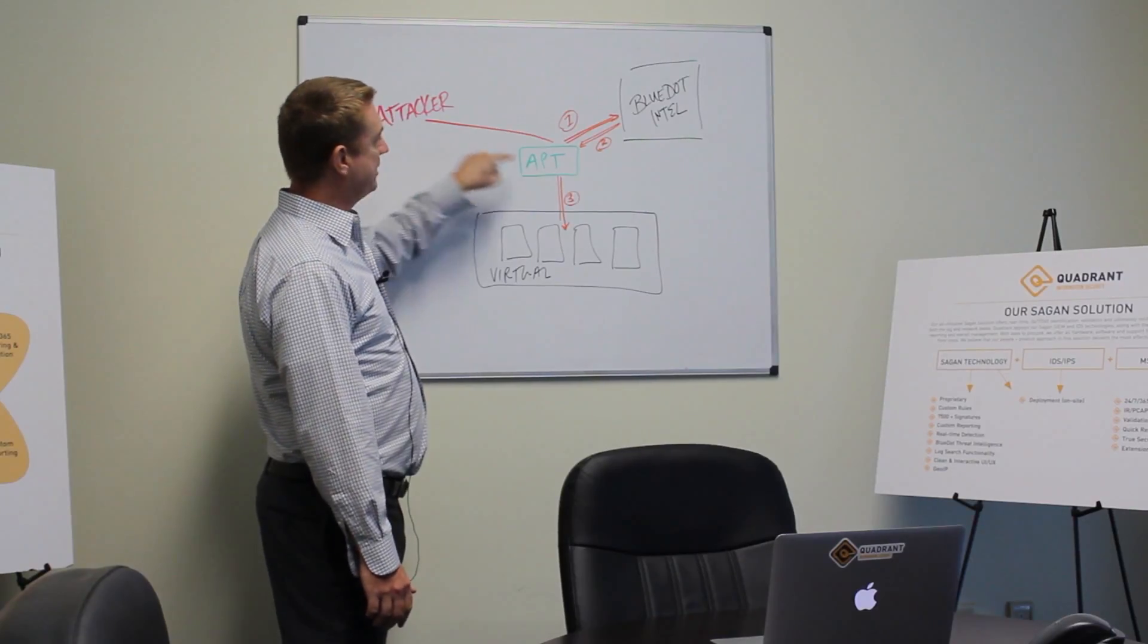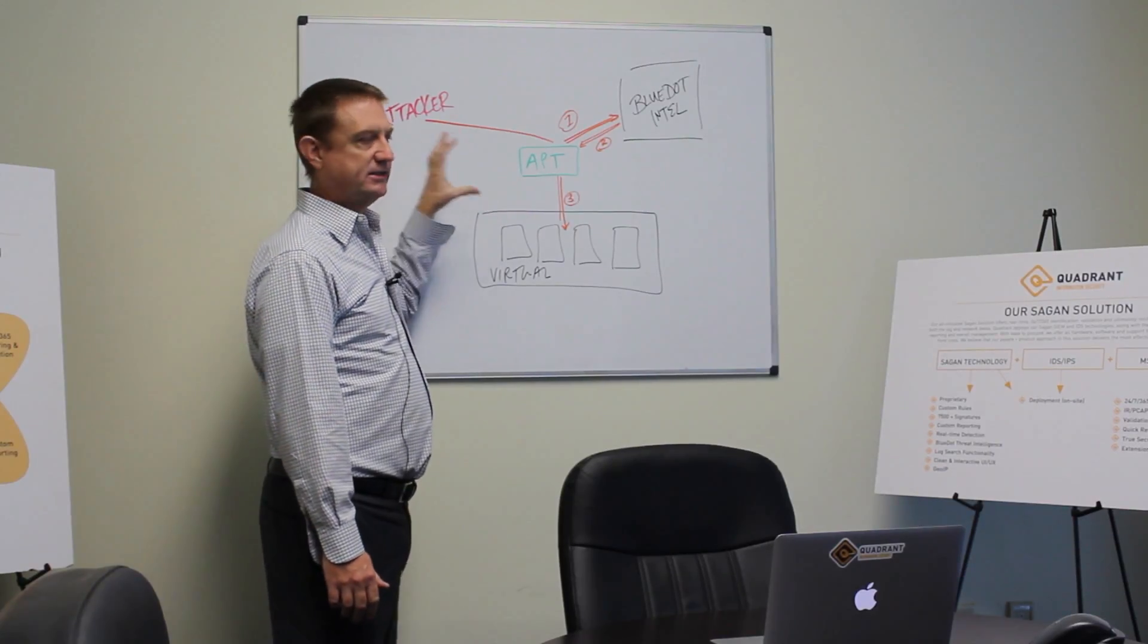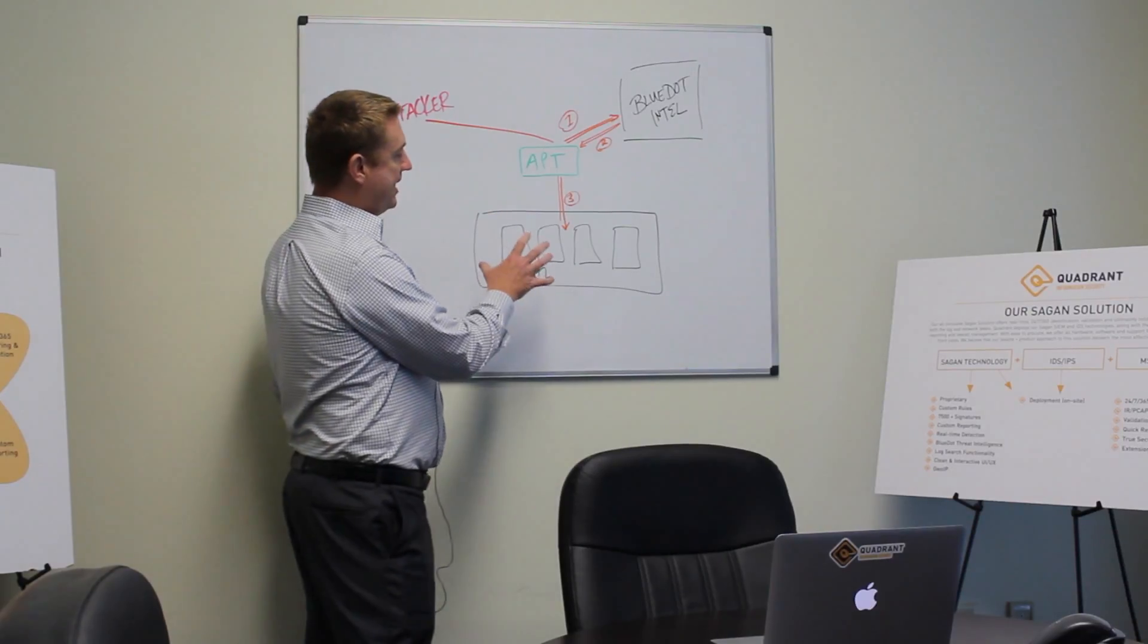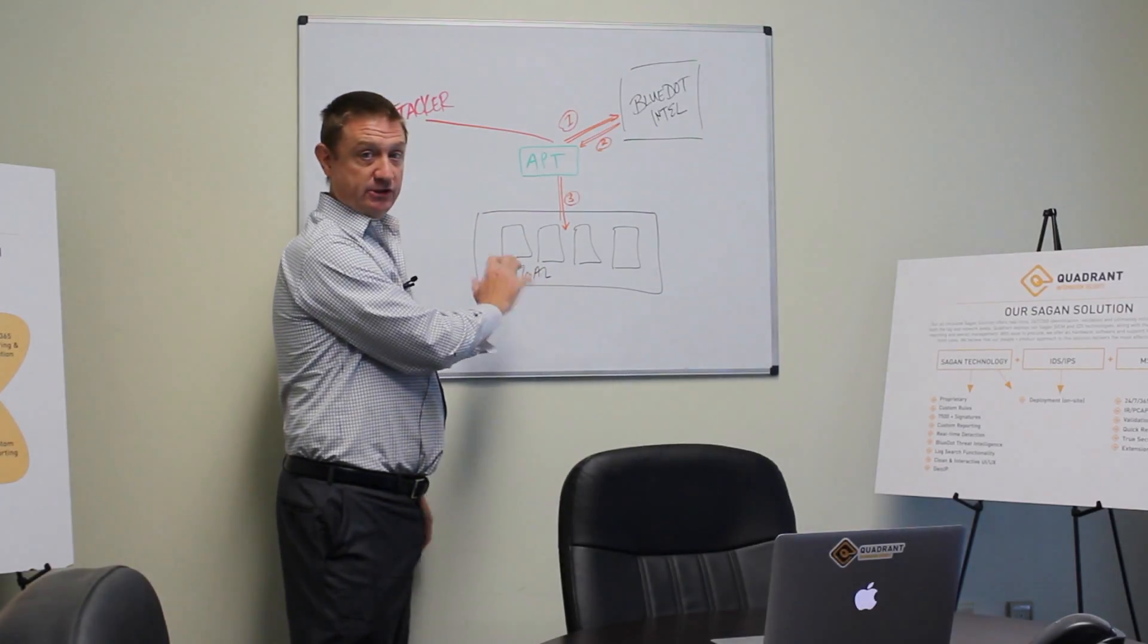However, when the attacker attacks our APT deflector, which is a small device in your network, we actually pass them to our Quadrant Information Security network.